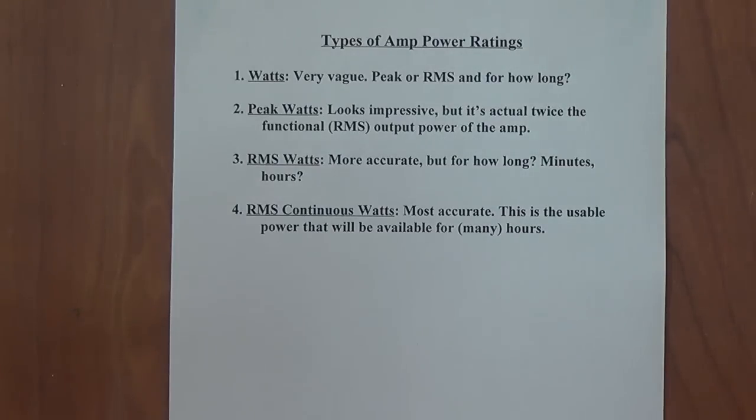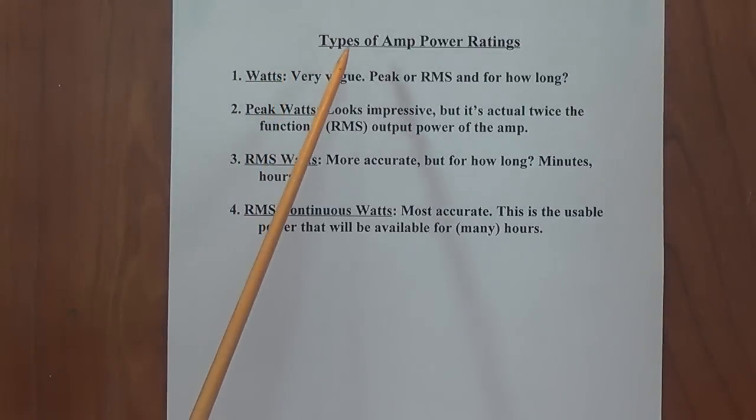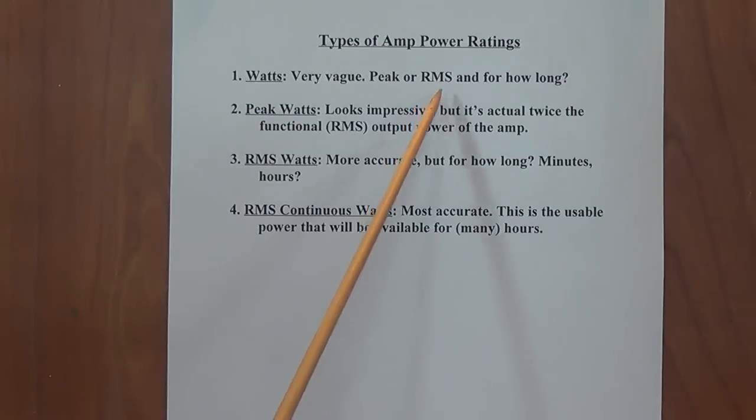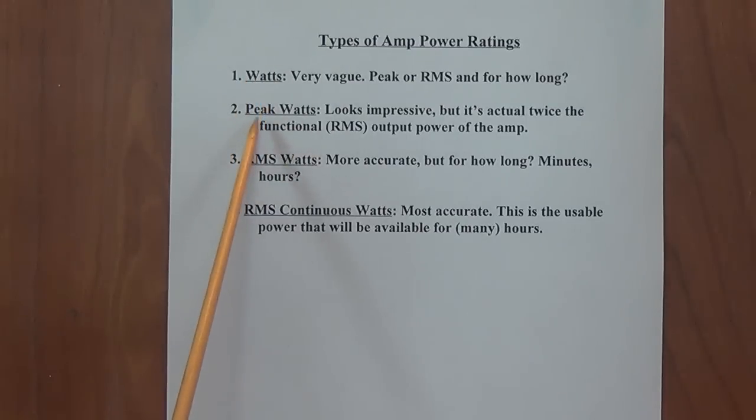Which leads us here to our final slide, and that is different types of amp power ratings. Most amps that I see, they just say how many watts. It's very vague. They're not telling you whether they used peak or RMS voltage to determine that, and they're sure not telling you for how long. So this is as ambiguous as it can be. Then they can just be honest and say, I use peak watts. I mean, I'm completely unscrupulous and totally misleading, but at least I admit it, I use peak watts. I use the peak voltage when I calculate it, just like I did in the previous slide. And yeah, it looks impressive, but it's actually twice the functional output power of the amp, the RMS power. So if you see peak watts, mentally divide that value by two, and you'll have the RMS watts.